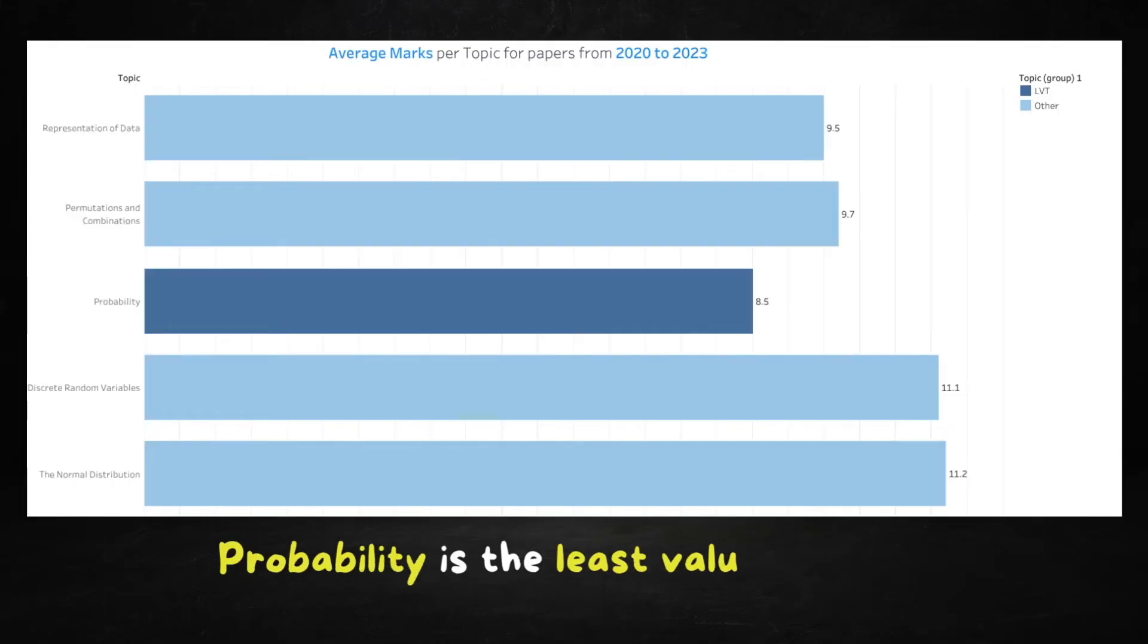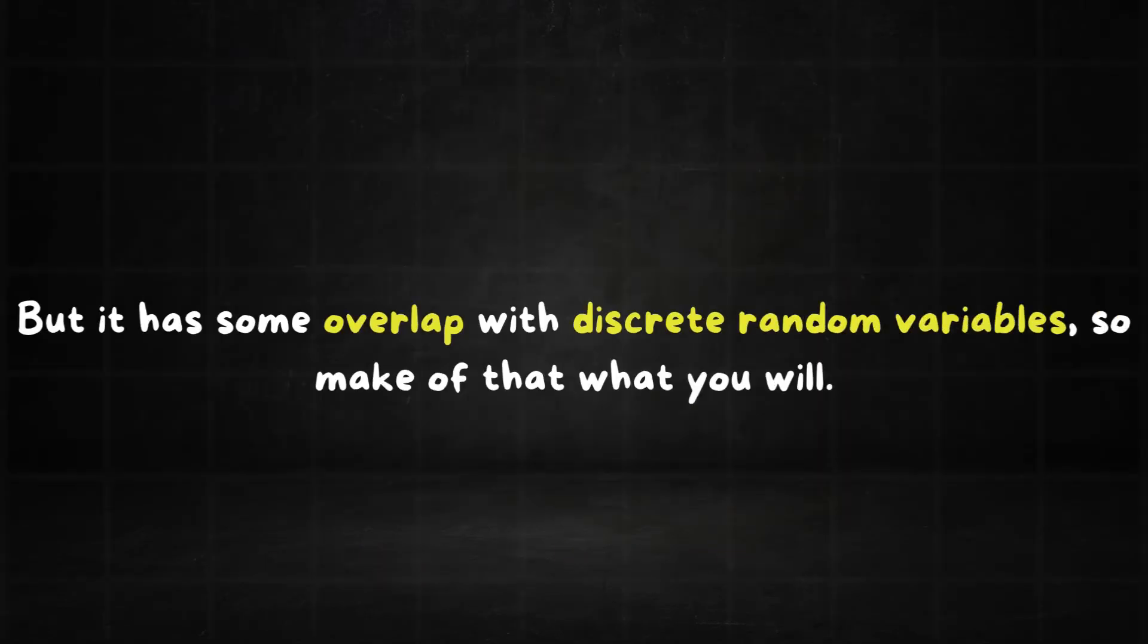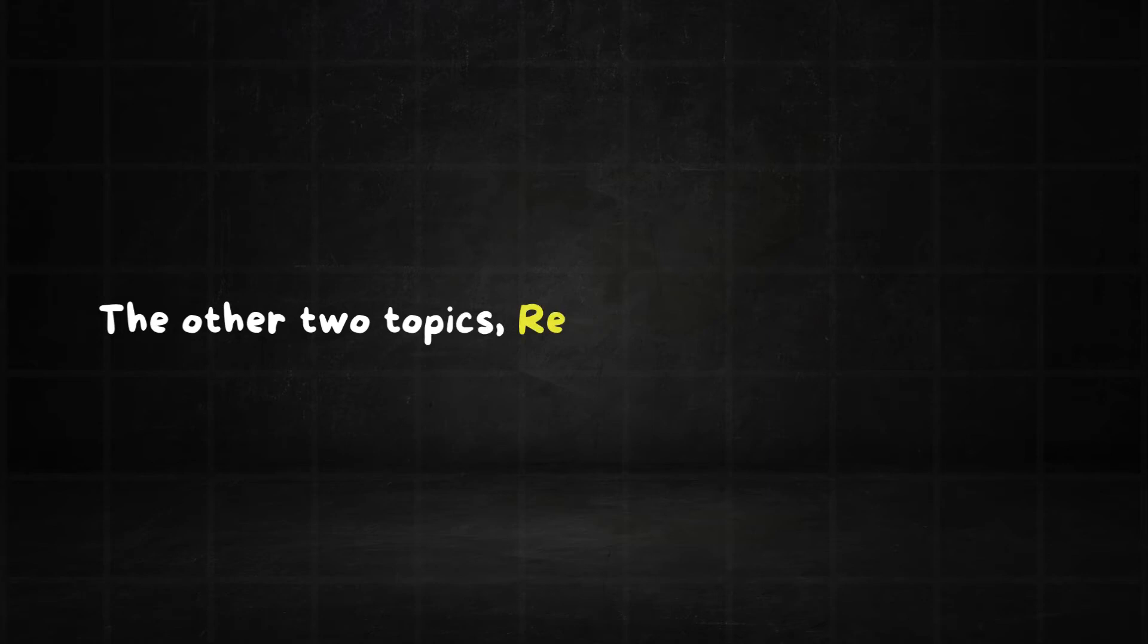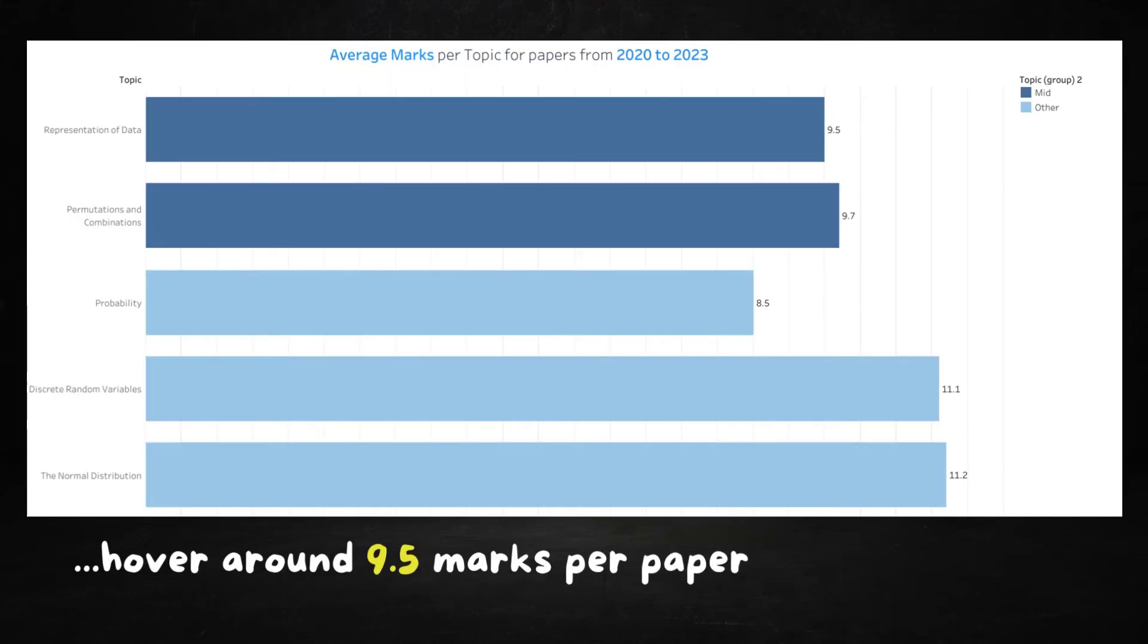On the other end, probability is the least valuable. But it has some overlap with discrete, so make of that what you will. The other two topics, representation of data and permutations and combinations, have around 9.5 marks, so don't neglect those either.